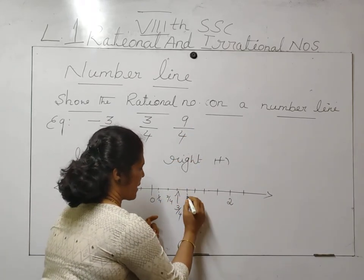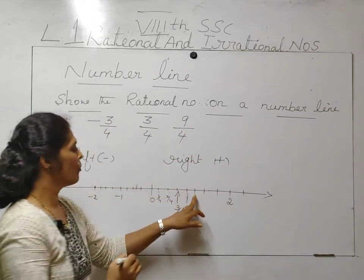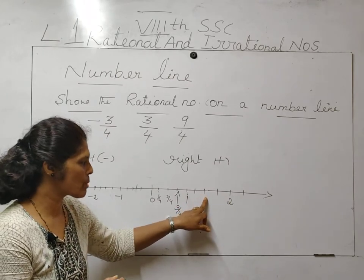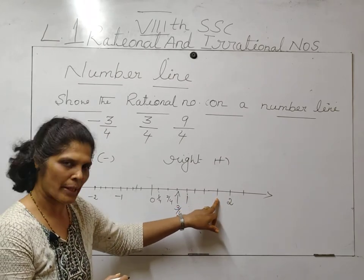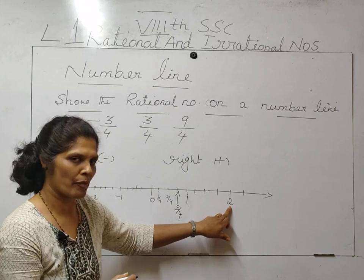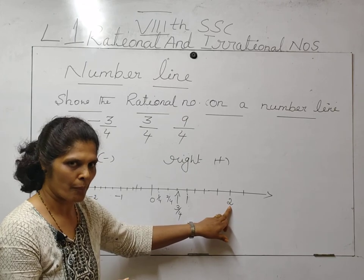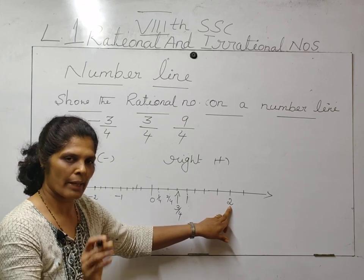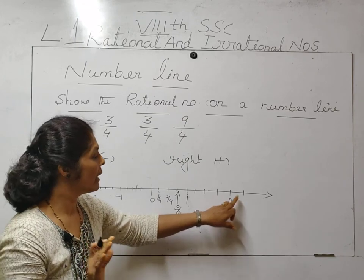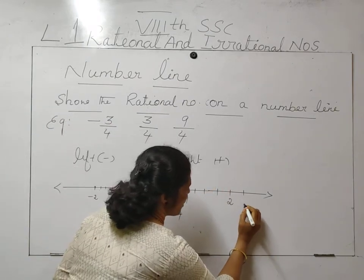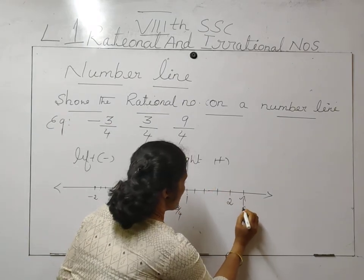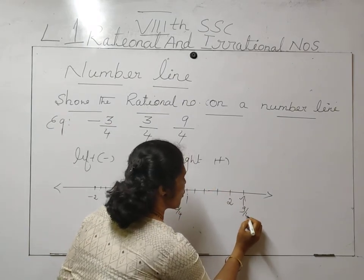Second: 9 by 4. Now 4 by 4 gives you 1. After 4 by 4 comes 5 by 4, 6 by 4, 7 by 4, this is 8 by 4 which equals 2. So counting further: 4 ones are 4, 4 twos are here — here comes 9 upon 4. This is your 9 upon 4.